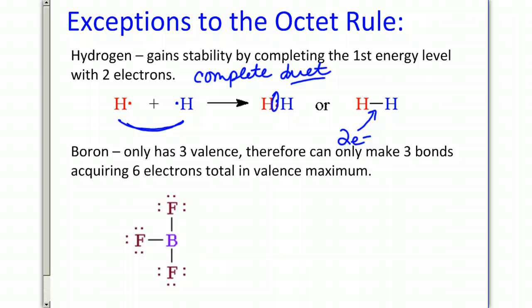There's only two electrons in the bond between them. As opposed to boron, which, because it only has three valence, it can only make three bonds. And so it's going to acquire a maximum of six total valence. So here's the example where you have a boron surrounded by three fluorine atoms. And notice that boron only has 2, 4, 6 electrons. That's the maximum. That's it for boron. It's not capable of having an octet.